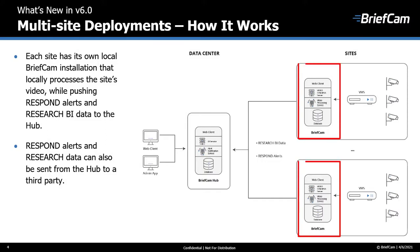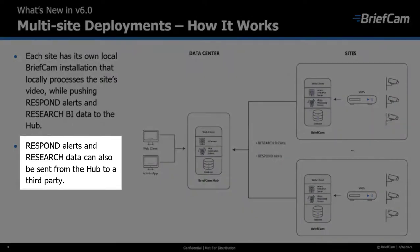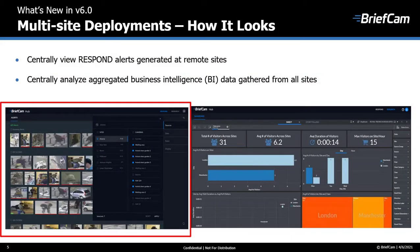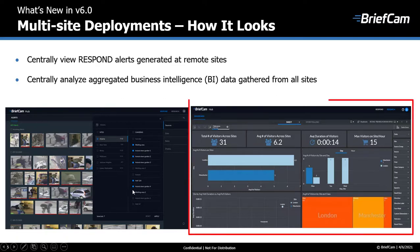Here is how it works. Each site has BriefCam installed locally, processes the site's video, and then pushes the respond alerts and the research business intelligence data to the hub. Respond alerts and research data can also be sent from the hub to a third party. In the hub, you can view respond alerts in one location generated from all remote sites, as seen in this image, and analyze aggregated business intelligence data from all sites in dashboards.